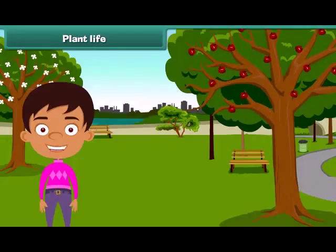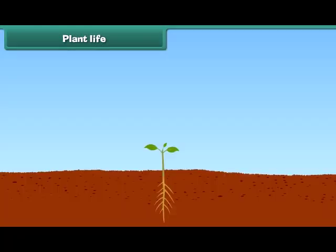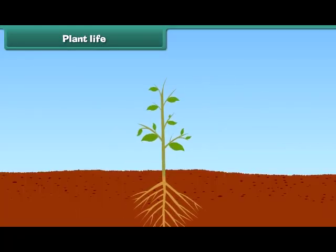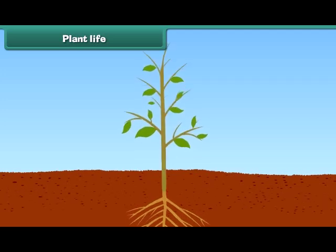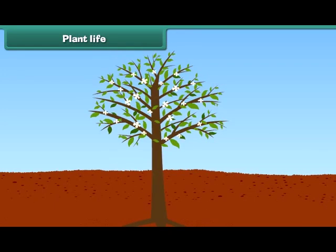Hello, friends. I am Sam. Do you know that plants are also our friends as they give us food and many other useful things. Besides this, they also give us shade. They are also living like us. They need their own food and water to live and grow. They also have the ability to grow and become tall like us.